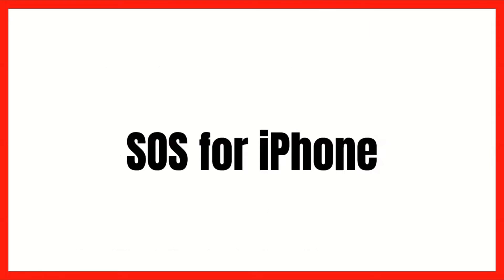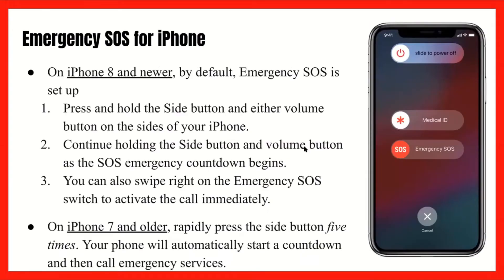SOS for iPhone is a really similar process — you would enable it in your settings, which I'll show you later. On iPhone 8s and newer versions, Emergency SOS is already set up by default, so you don't have to set it up through settings. The way you would use it is by pressing and holding the side button and either volume button on the sides of your phone. You would continue holding these two buttons as the SOS emergency countdown begins. You can also swipe right on that Emergency SOS switch to activate the call immediately.